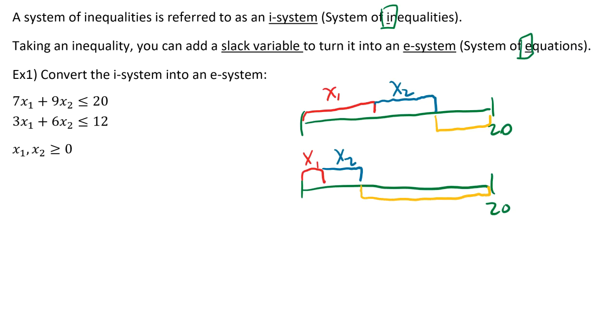All we know is that whenever you add up x1 and x2, or 7x1 and 9x2, that it has to be less than or equal to 20, or whatever number is on the right side. So if we want it equal to 20, then we just need to fill in that gap. Since we don't know what number to fill it in with, we're just going to give it a variable. That variable is called a slack variable.